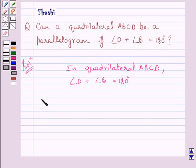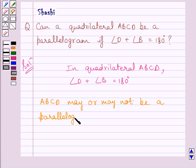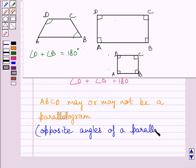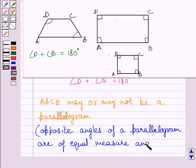Note that rectangle and square both satisfy all the properties of a parallelogram, so both represent a parallelogram. Therefore, quadrilateral ABCD may or may not be a parallelogram, because opposite angles of a parallelogram are always equal and they may or may not be supplementary.